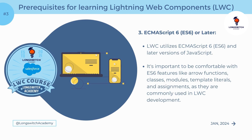Lightning Web Components leverage the modern features introduced in ECMAScript 6 and later versions of JavaScript. Familiarity with ES6 features such as arrow functions, classes, and modules enhances code readability and organization. A solid understanding of these modern JavaScript concepts ensures that you can make the most of LWC's capabilities in a clean and efficient manner.